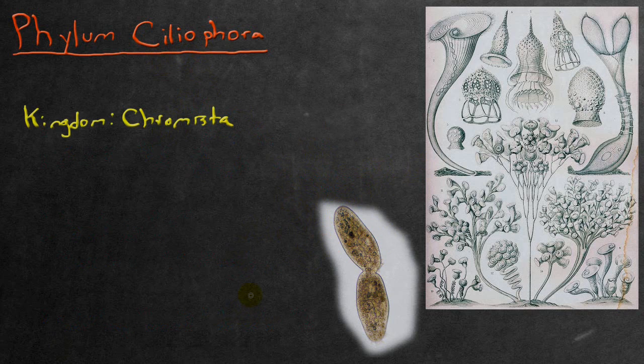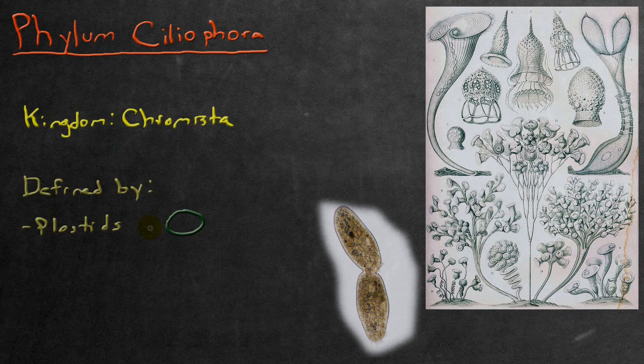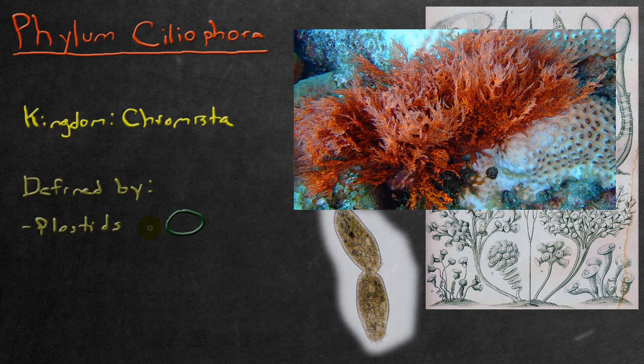Now let's talk about the kingdom Chromista, which the Ciliophora phylum is a part of. Members of the kingdom Chromista are defined by the presence of certain types of plastids, which are small circular organelles. They are thought to have been inherited from some kind of red algae ancestor.